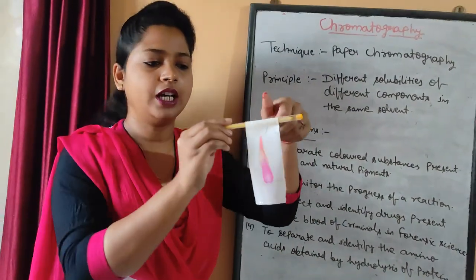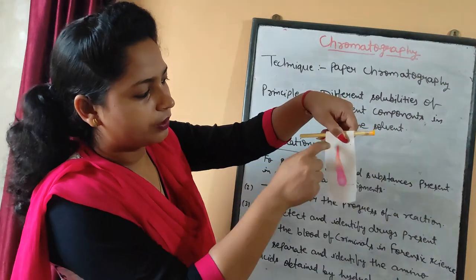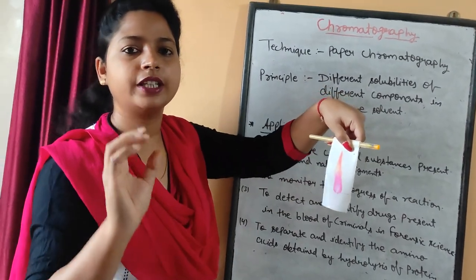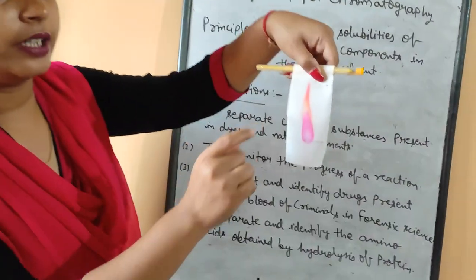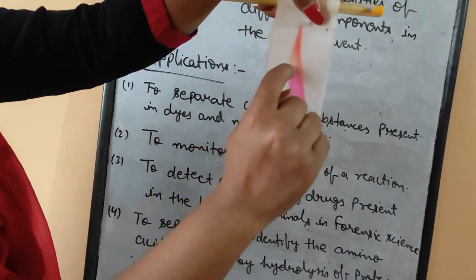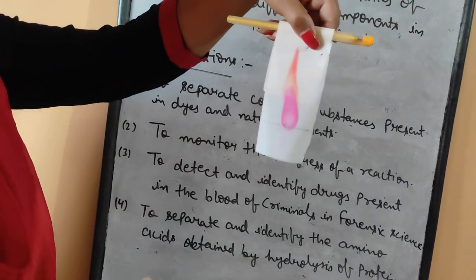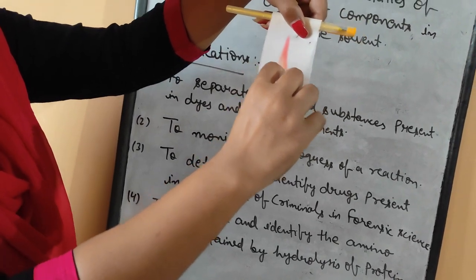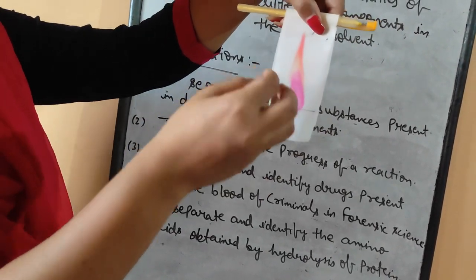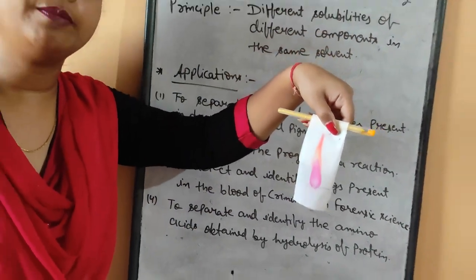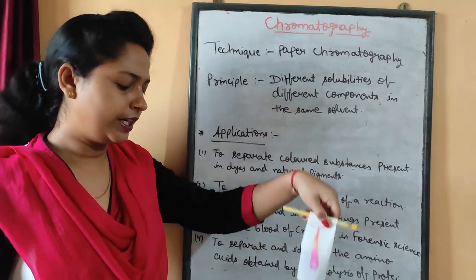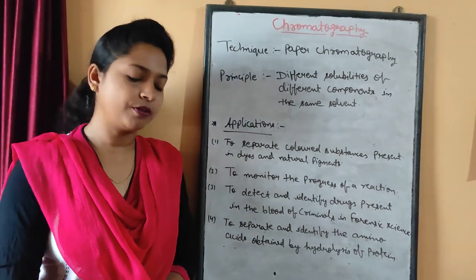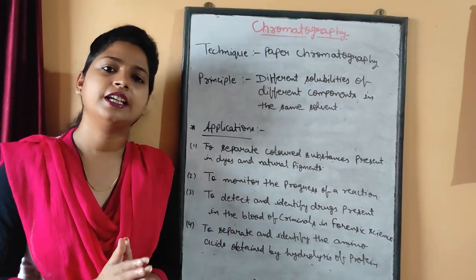Now if we want to extract a specific color — for example the red color — we just cut that portion of the paper and keep it in water. After some time the paper dissolves and we get the red solution. If we want the yellow color, we cut that strip and keep it in another beaker containing water, and we get the yellow solution. For the pink color, we cut that strip and keep it in another beaker of water to get the pink solution. By this method we can separate and collect different types of color.